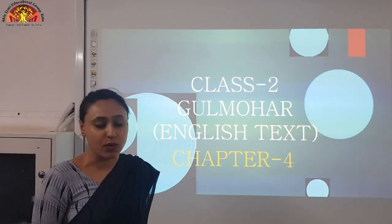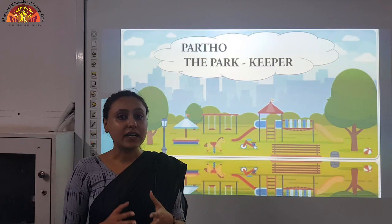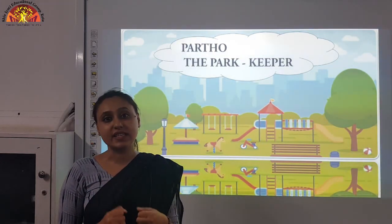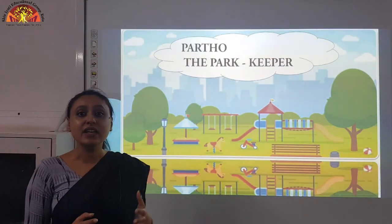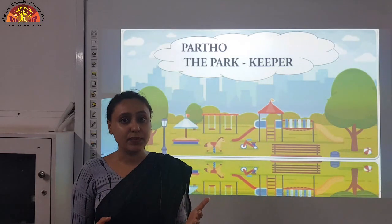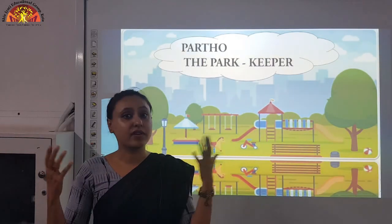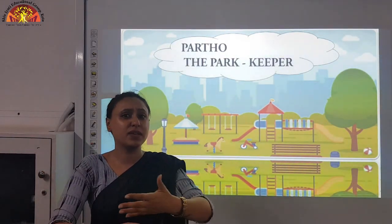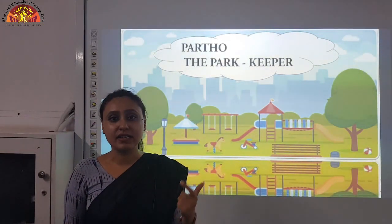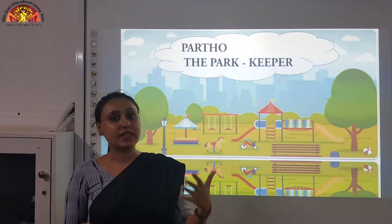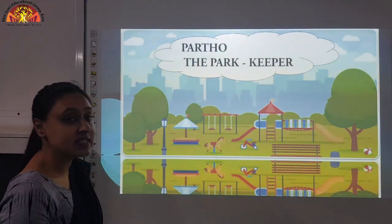In this we will study Chapter 4, Partho the Park Keeper. So children, who is a Park Keeper? A Park Keeper is a person who takes care of the park. In this story you will see Partho, who is a park keeper, who takes care of the park. Just imagine what will happen if there is no one to take care of the park? There will be garbage all around. So the park keeper takes care of the park, and in this story you will see how Partho takes care and how much he loved his job. So let's start our chapter.